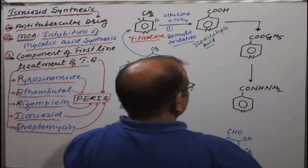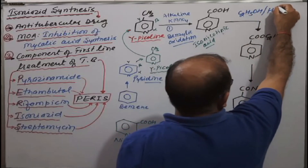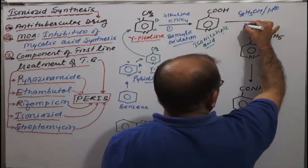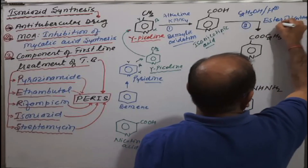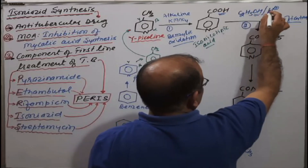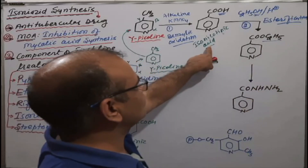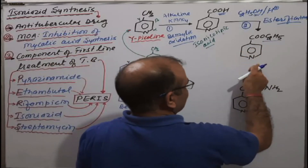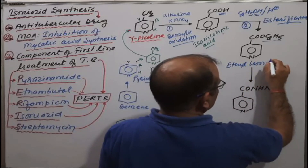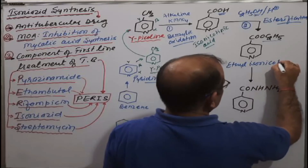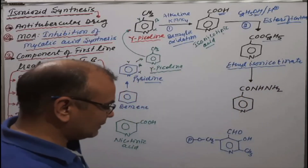Isonicotinic acid is esterified using C2H5OH (ethanol) in the presence of acid — this is reaction number two, esterification. The alcohol reacts with the carboxylic group to form the ester, and the product is ethyl isonicotinate.